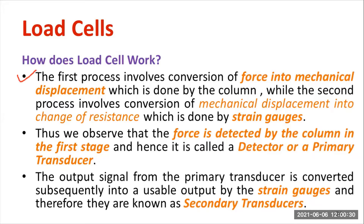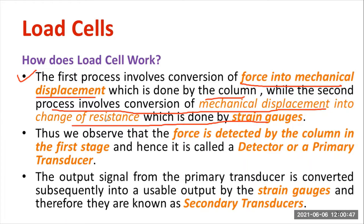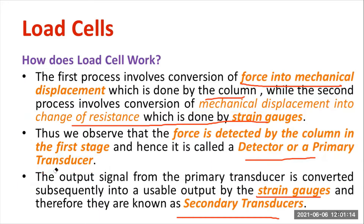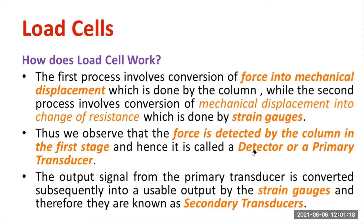The first process involves conversion of force into mechanical displacement or strain, which is done by the column — a rectangular column or elastic body. The second process involves the conversion of mechanical displacement into changes in resistance with the help of strain gauges. The force is detected by the column in the first stage, making it the primary transducer, while the strain gauge is the secondary part. Load cell operates with the help of a strain gauge — without a strain gauge, load cell is not possible.